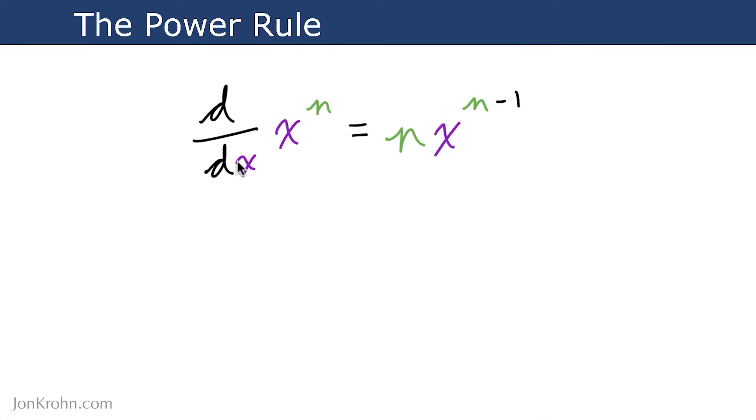So if you take the derivative of some variable that's to the power of n, then the result is that variable, say x, with the power now in front of it as a multiple, and the power, you subtract one.